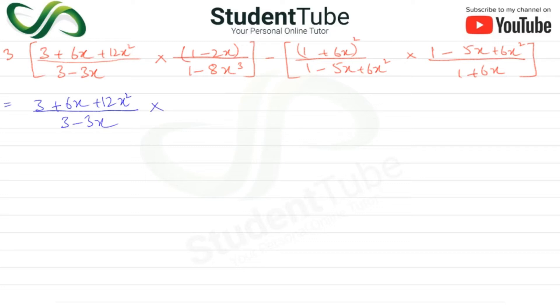Multiply by 1 minus 2x. Now if we factorize this, it will be 1 cubed minus 2x cubed.